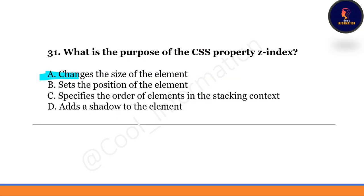Next question: what is the purpose of the CSS property z-index? Option A changes the size of an element. Option B sets the position of an element. Option C specifies the order of an element in the stacking context. Option D adds a shadow to the element. The correct option is C. Z-index is a very important CSS property — if one element has z-index 1 and another has z-index 2, the element with z-index 2 will be stacked higher.